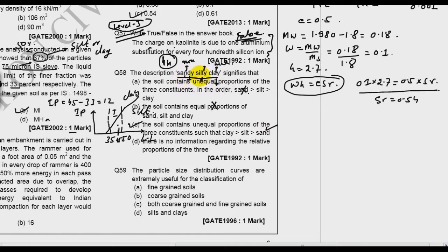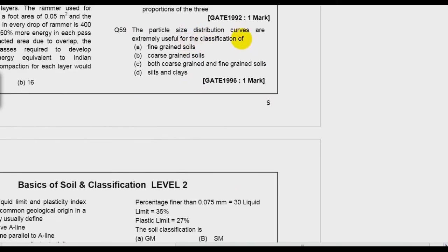The particle size distribution curves are extremely useful for the classification of soil. Whenever we do particle size distribution it is helpful for both coarse grain and fine grain. This we get from wet analysis: less than 75 micron we get from wet analysis and above we get from sieve analysis.